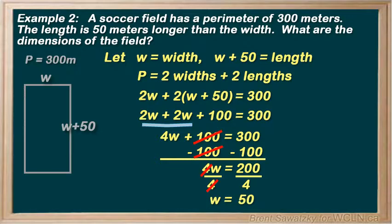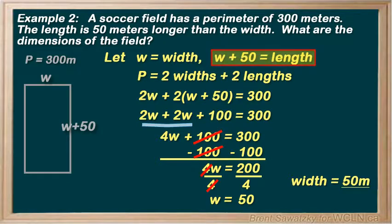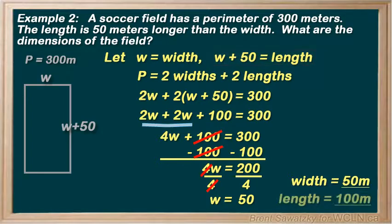Is this our answer? Well, step 4. Let's go back to the original equation. We're asked for the dimensions of the field. And when we're asked for dimensions, we need to provide both the length and the width. We documented that w equals the width of the field. So we know that width is 50. And to fully answer the question, we need to say that the length was w plus 50, or 50 plus 50 equals 100 meters. So the dimensions are 50 meters by 100 meters. And we're done.